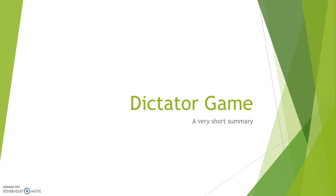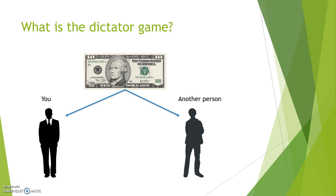In this video, I'm going to give a short summary of the dictator game. What is the dictator game? Imagine that you are given a certain endowment, let's say $10, to be split between you and another person. You make the decision solely — the other person has no say and no way to influence the amount which you or he or she receives.